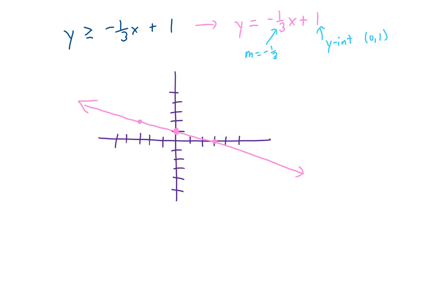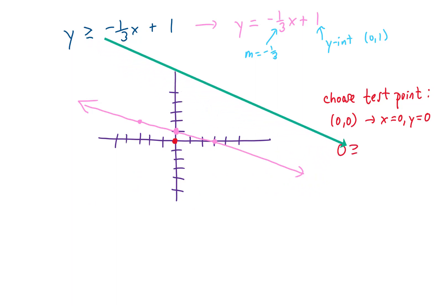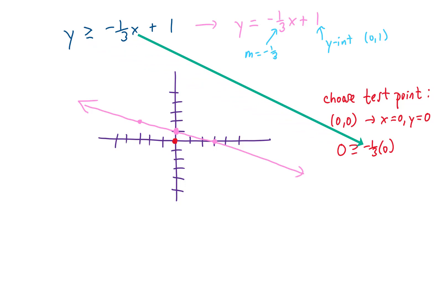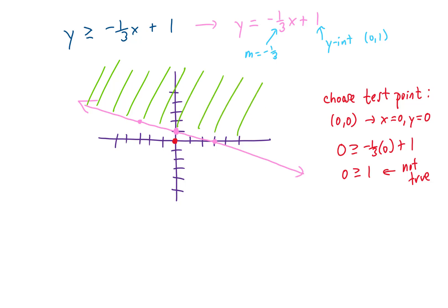Now we choose a test point. The origin (0, 0) is a simple choice. Plugging x equals 0 and y equals 0 into the original inequality gives us 0 is greater than or equal to negative one-third times 0 plus 1. Simplifying tells us 0 is greater than or equal to 1, which is not true. That means (0, 0) is not in the solution set, so the solution set is on the other side of the line from the origin — the region above this solid line.